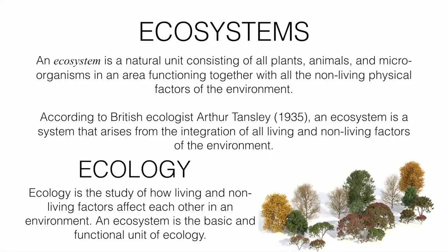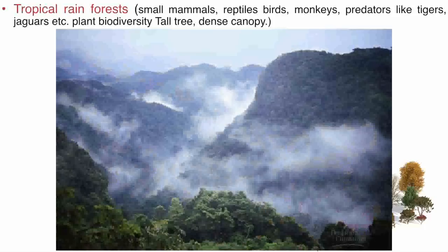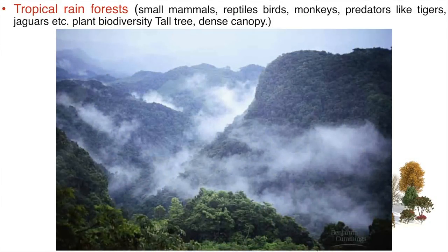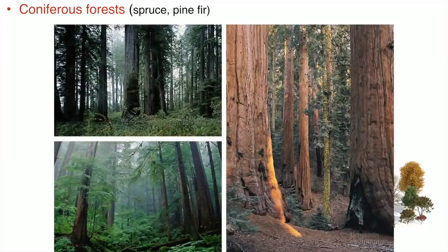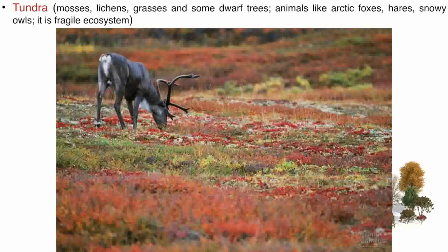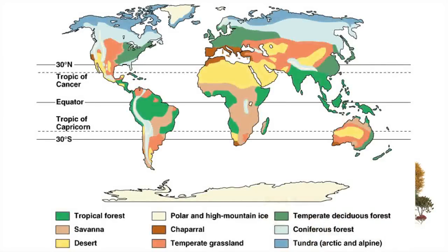These are some examples of ecosystems: tropical rainforest, temperate forest, conifer forest, and tundra region. These show the distribution of different regions across the globe. Blue represents the tundra region, green represents tropical forest, orange is savannah, and yellow is desert. Different areas have different ecosystems.